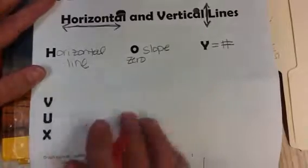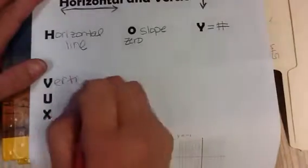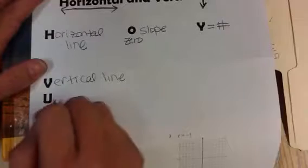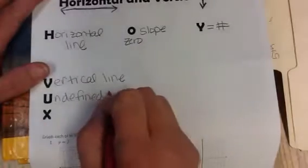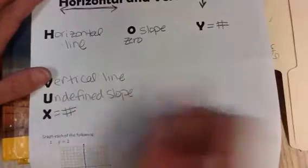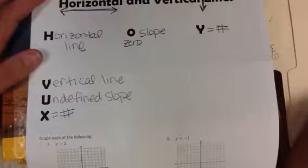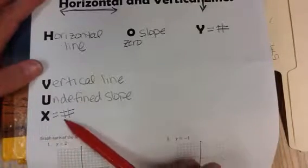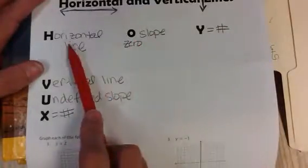The other mnemonic we use is VUX. VUX stands for Vertical line, Undefined slope, and X equals a number. So every vertical line has an undefined slope and is in the form X equals a number. Going the other way: anything that's X equals a number has an undefined slope and is a vertical line; Y equals a number means zero slope and a horizontal line.